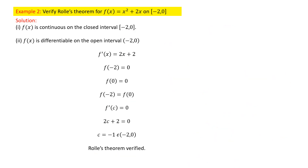Let us move to the second question: verify Rolle's theorem for the function f(x) = x² + 2x on the interval [-2, 0]. Here a = -2 and b = 0. The function is continuous since it is a polynomial, and it is differentiable on the open interval (-2, 0).